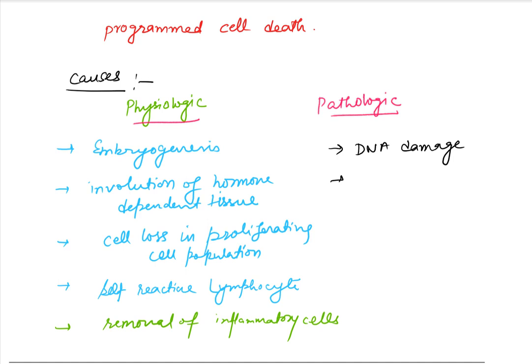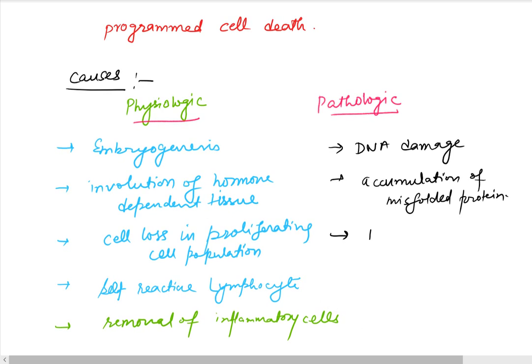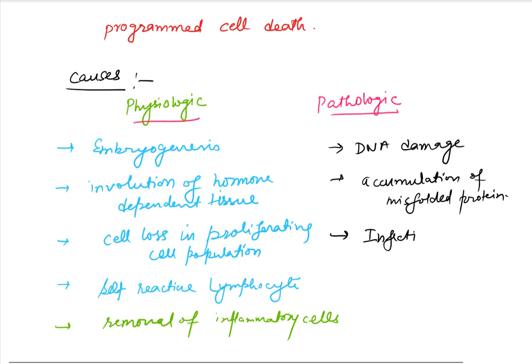Another pathologic condition is accumulation of misfolded proteins, where the protein tertiary and quaternary structures are not formed properly. The cells are destined to die. Certain infections, for example viral infections, are also conditions where apoptosis takes place.